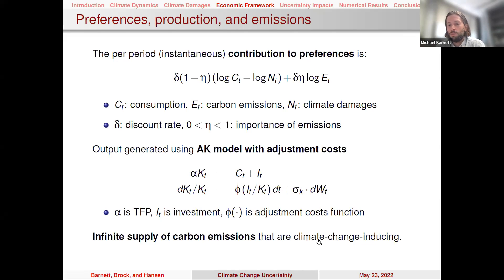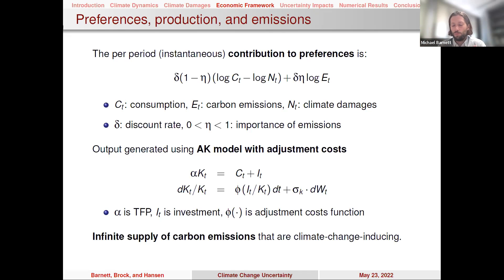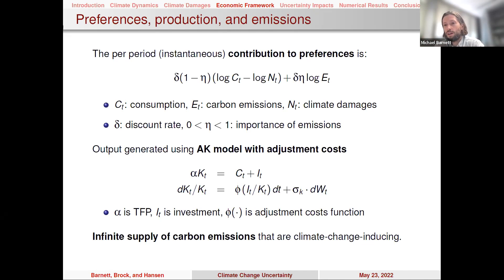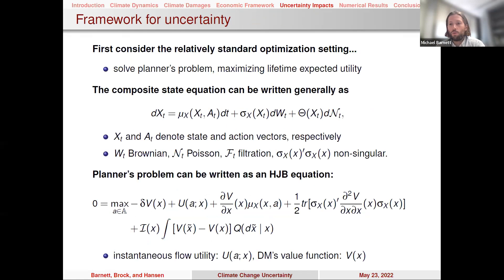Another simplification is that we assume an infinite supply of climate-change-inducing carbon emissions. In our RFS paper we had a limited stock of reserves with exploration, and found the framework is very similar to assuming a very large amount of reserves — within the range of what's technologically extractable. Between natural gas, coal, and oil, the amount of emissions available is large enough that we don't need to worry about limited supply in the near future, so this simplification is quite tractable and not unreasonable.